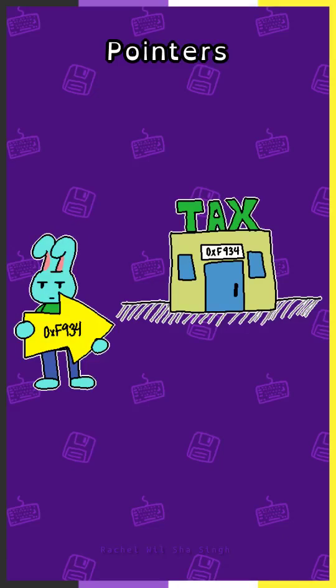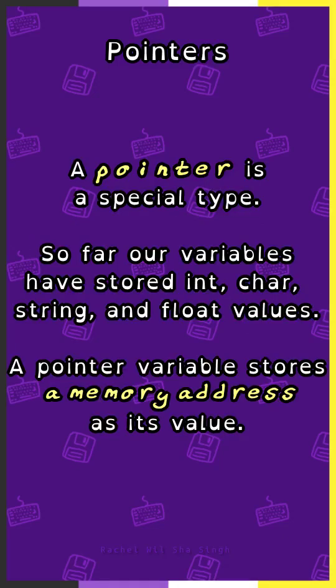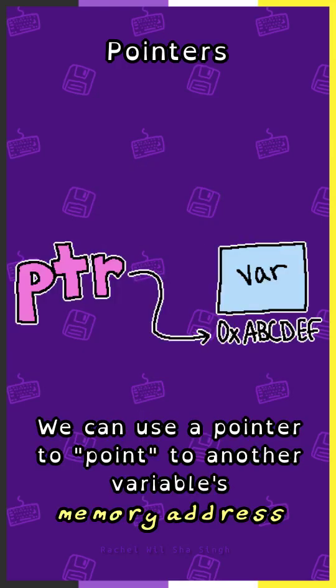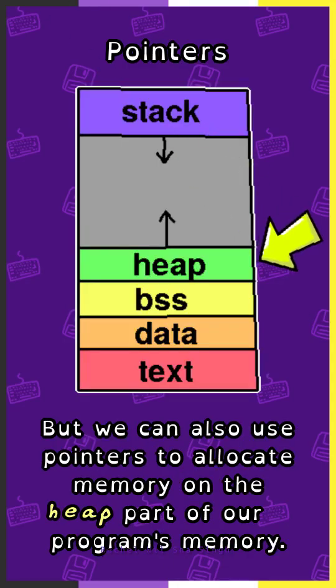A pointer is a special type. So far, our variables have stored integers, characters, strings, and float values. A pointer variable stores a memory address as its value. We can use a pointer to point to another variable's memory address, but we can also use pointers to allocate memory on the heap part of our program memory.